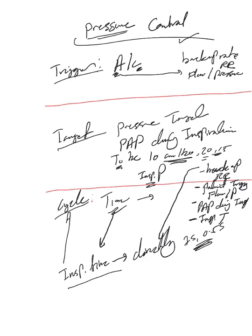The things you need to provide in pressure control are: a backup rate as the respiratory rate on the ventilator, a patient trigger which is flow or pressure, the proximal airway pressure value you want during inspiration, inspiratory time as the cycle, and then FiO2 and PEEP as with all other modes.